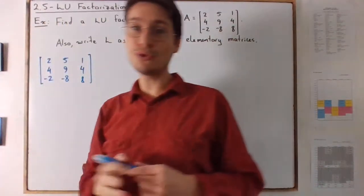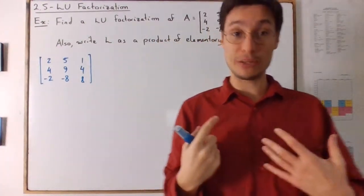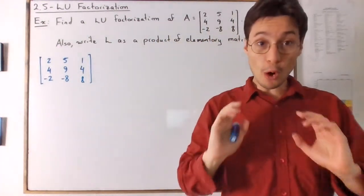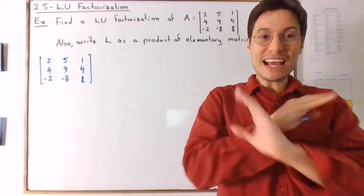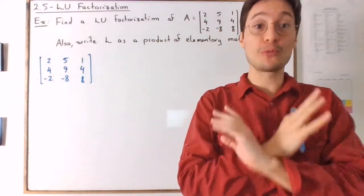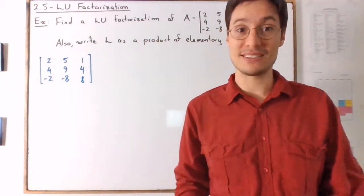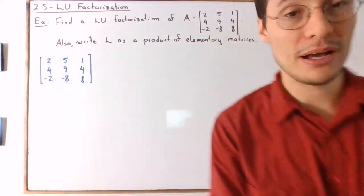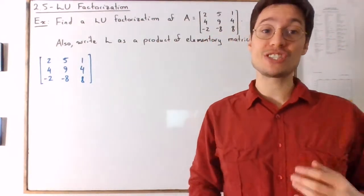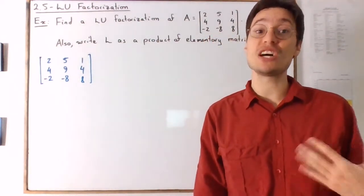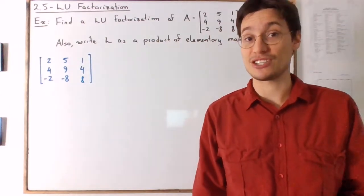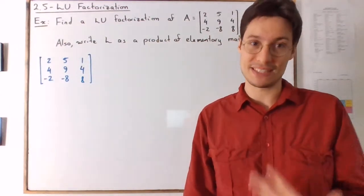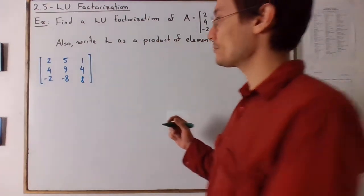I want to remind you the LU factorization. How it works is that we are row reducing A by using only row replacement, nothing else. If we have to use another operation, what it means is that the matrix doesn't have LU factorization. But I won't try to trick you with this.